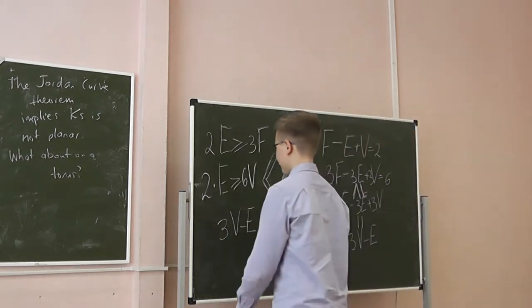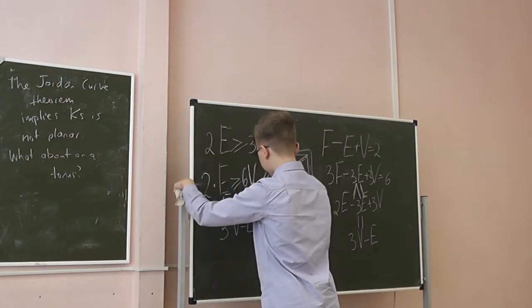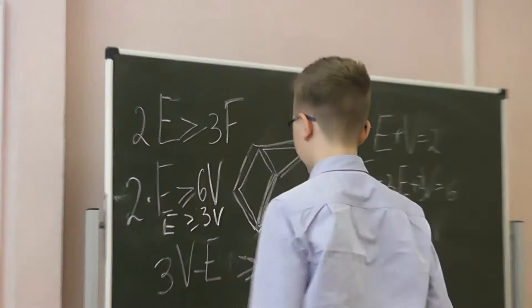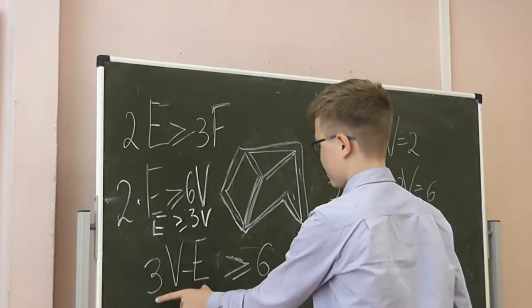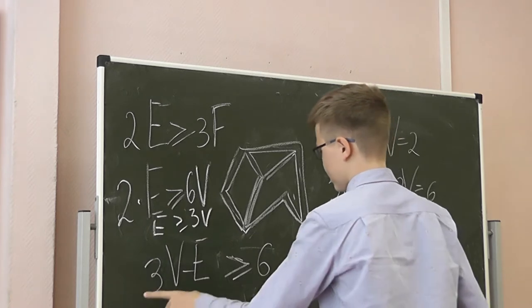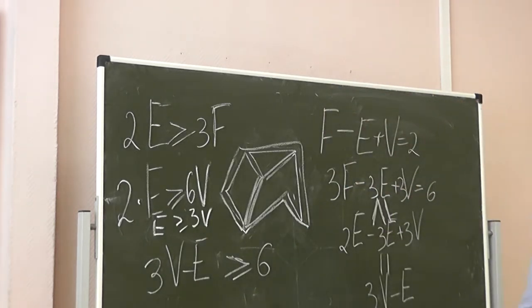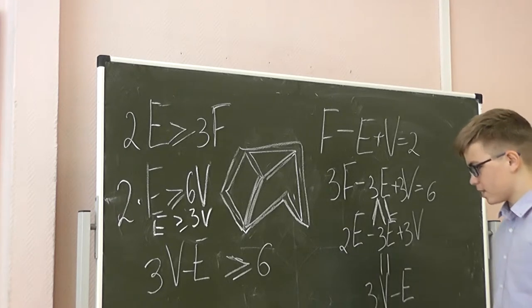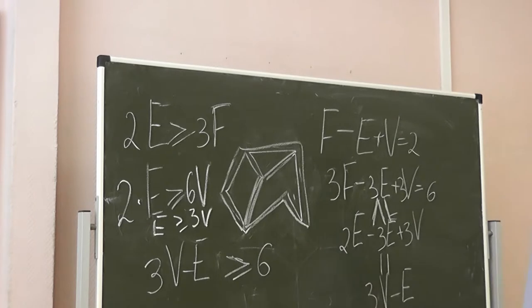And please look at the inequality that you just wrote: 2E is greater than or equal to. This is the same as E is greater than or equal to 3V. It means that it's bigger or equal to 6. Do you understand why 2E is greater than or equal to 6W?